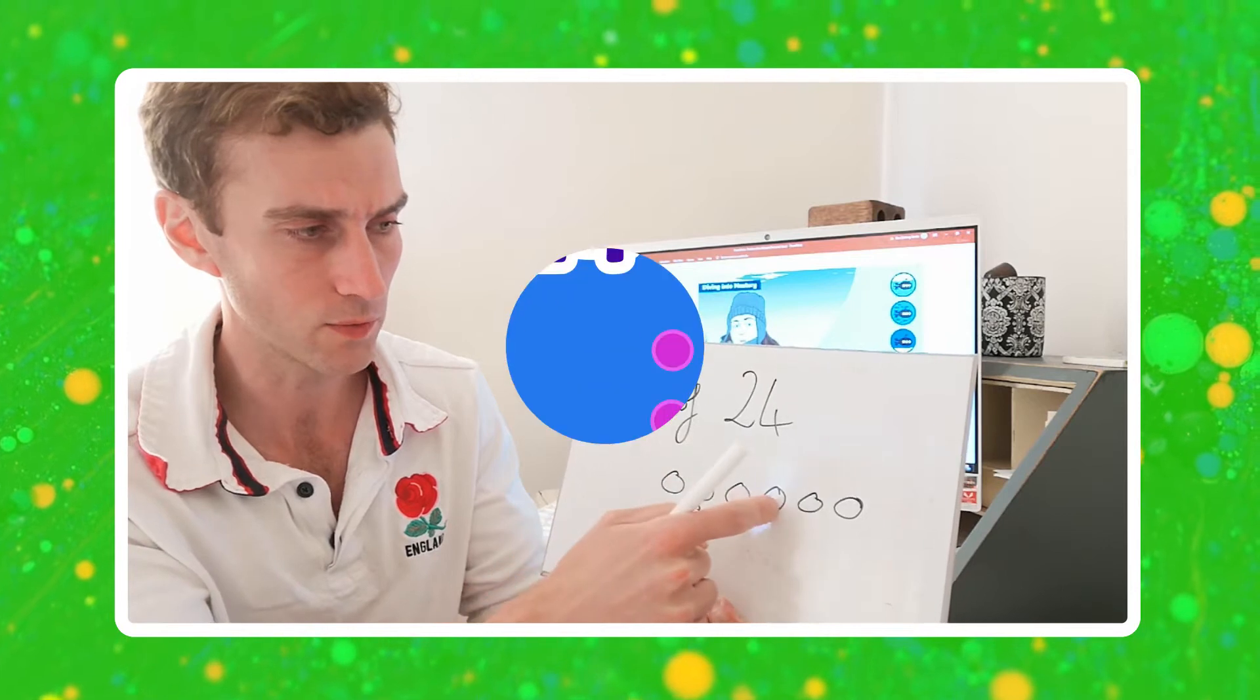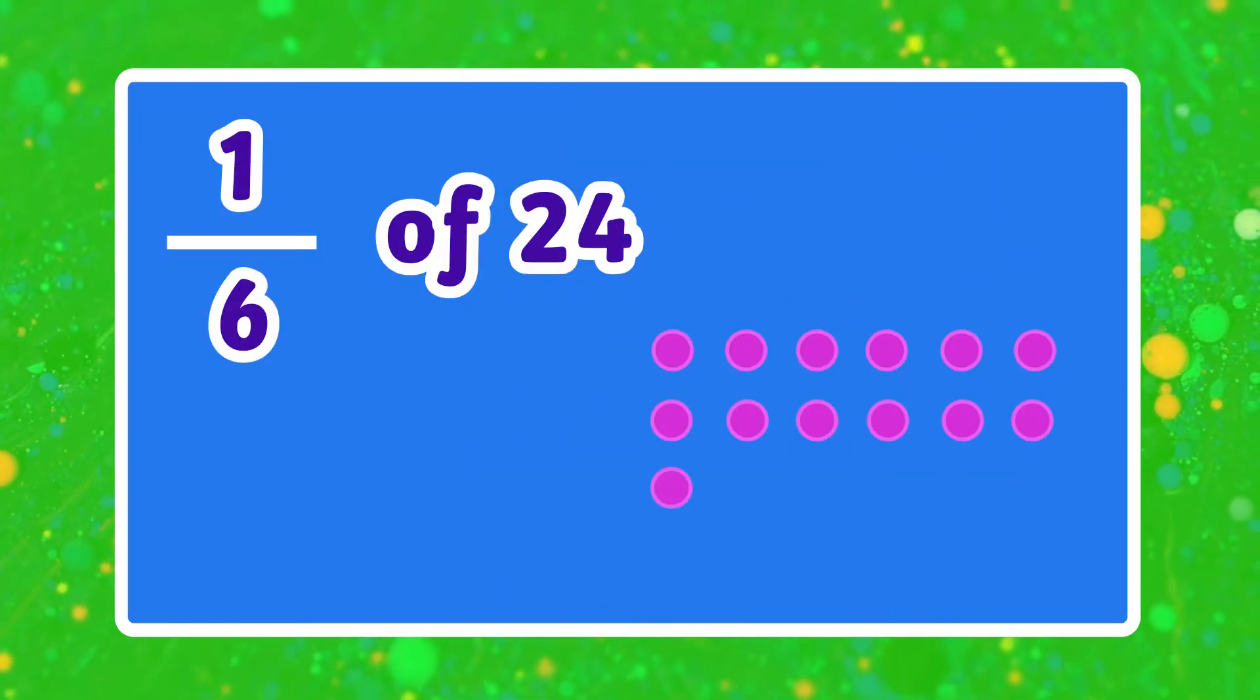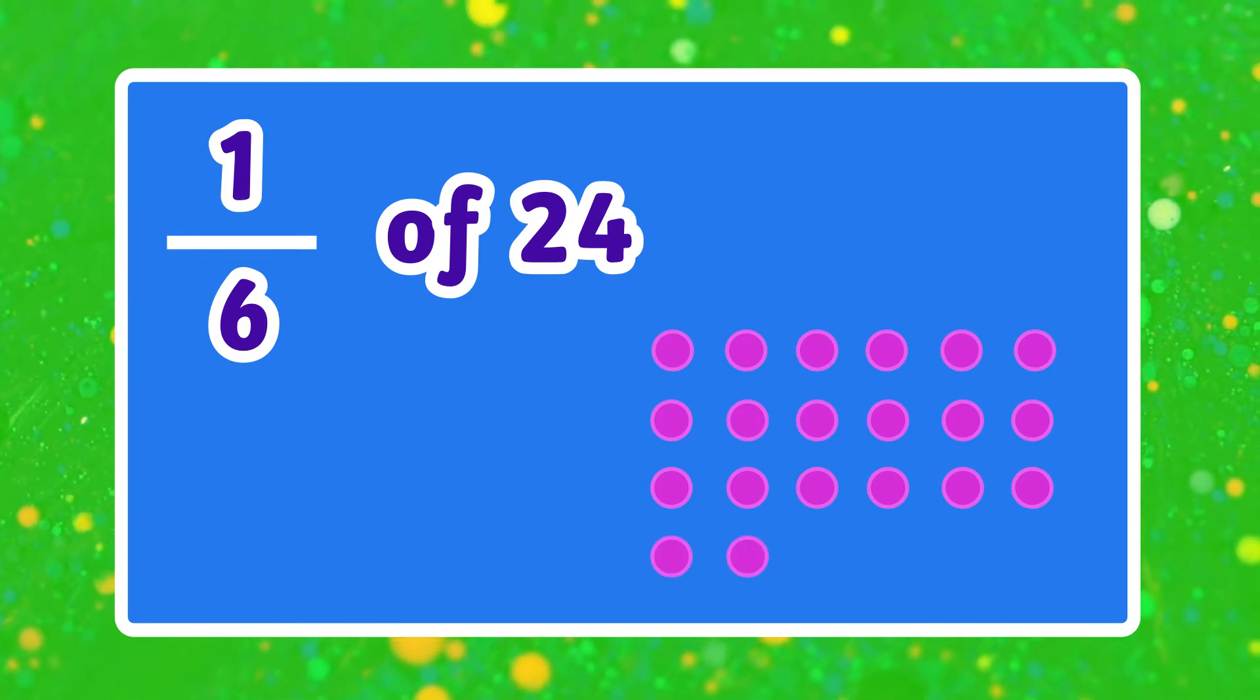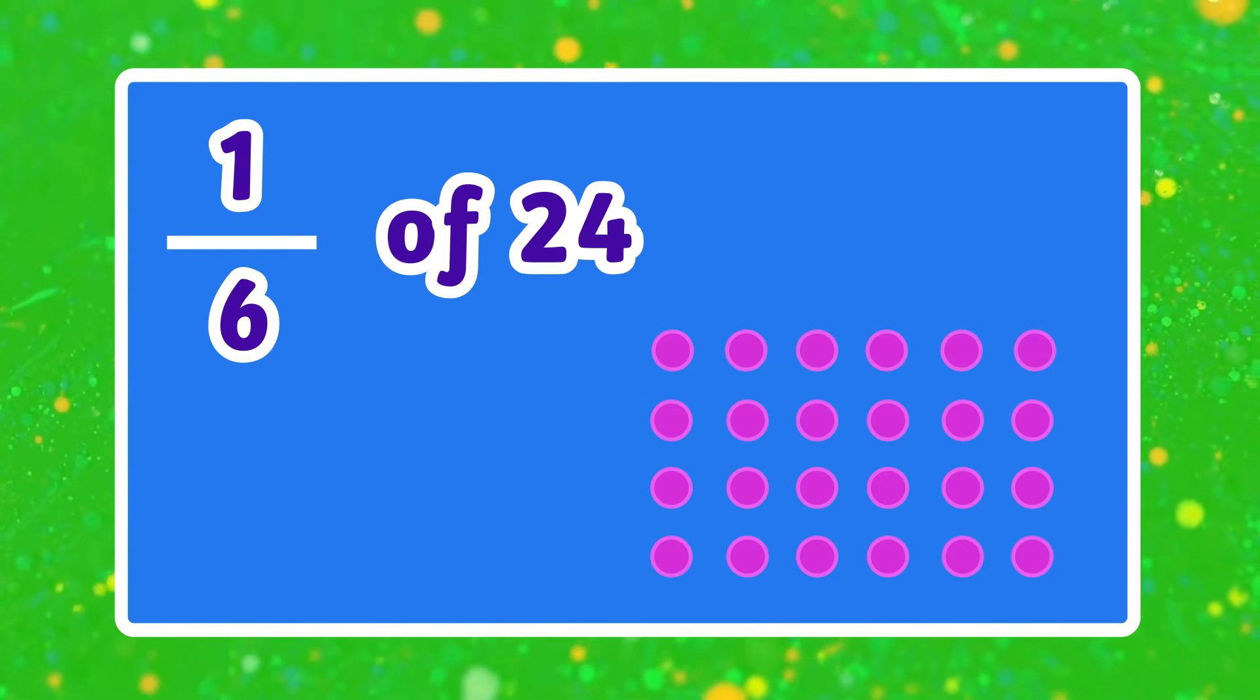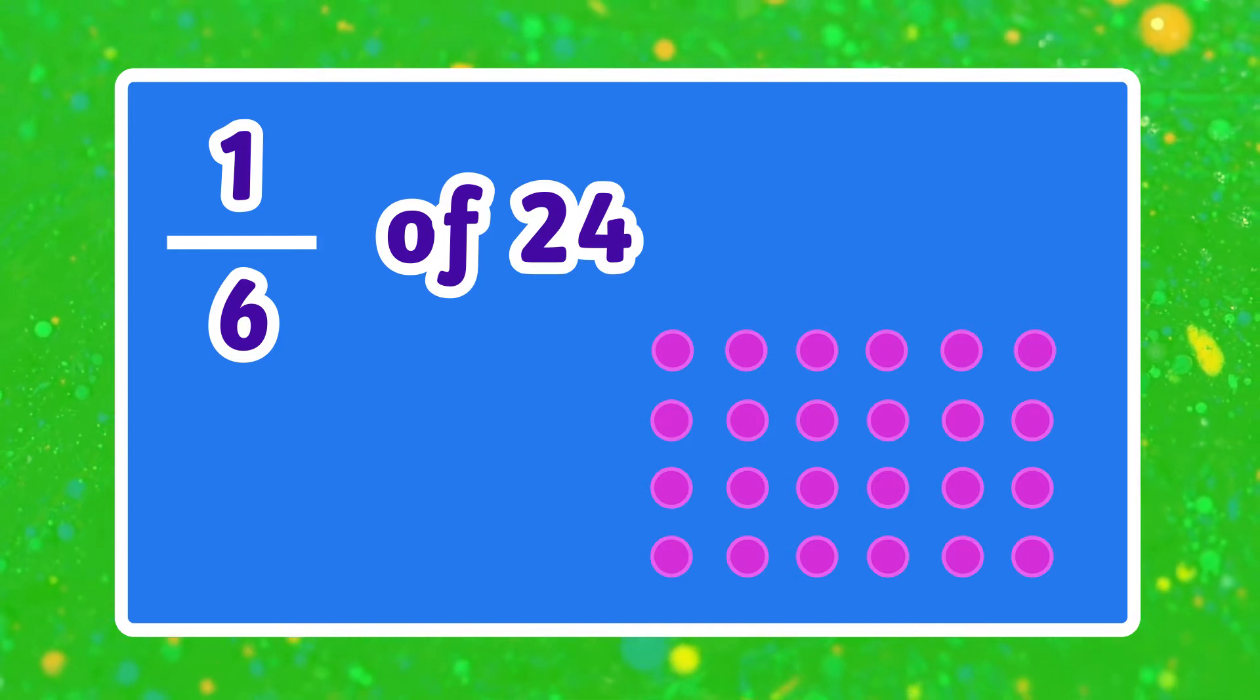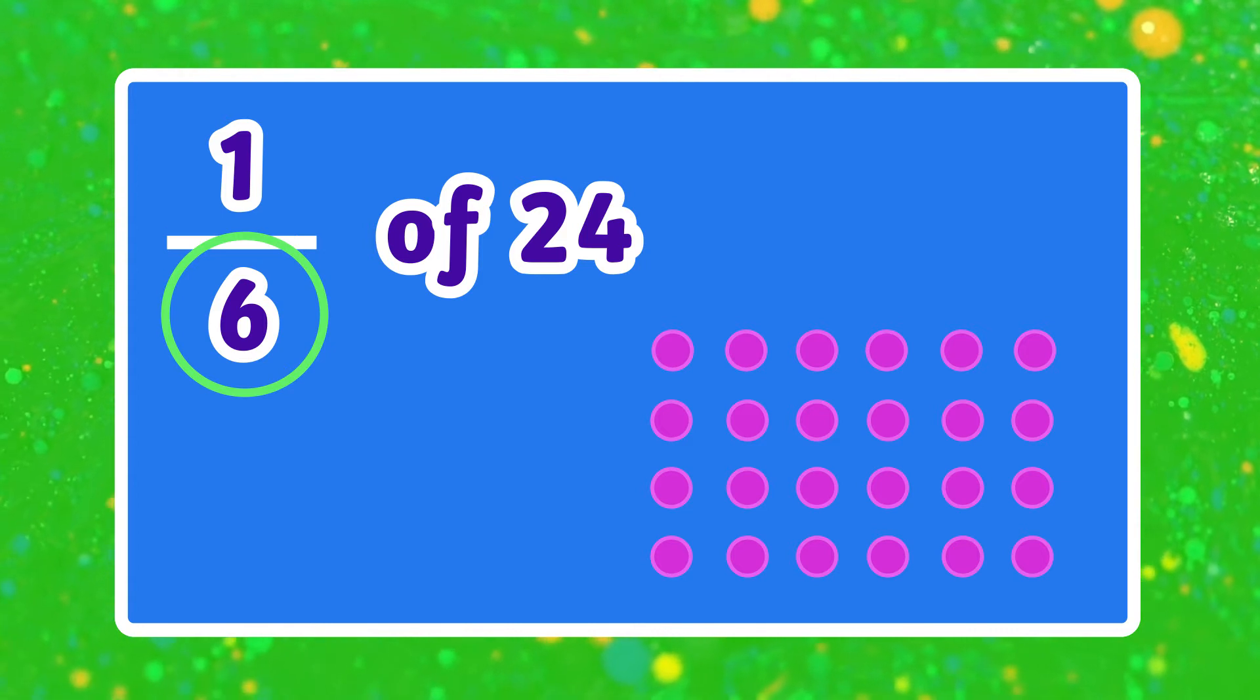Counting from 1 to 24, spreading them into six equal groups. I've got 24 items and I've shared them equally into six groups because the denominator tells me to make six equal groups.